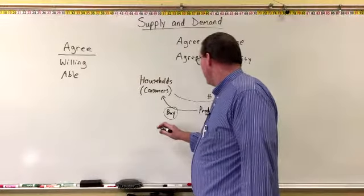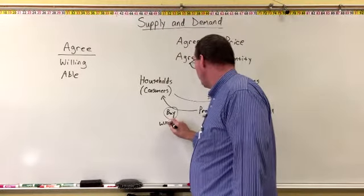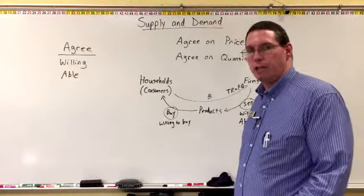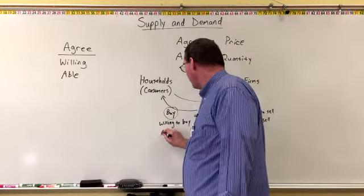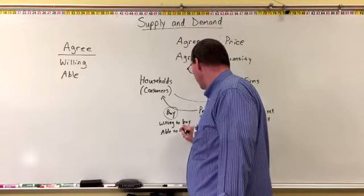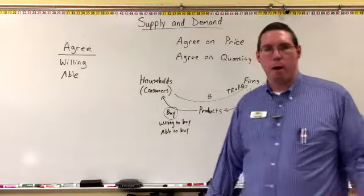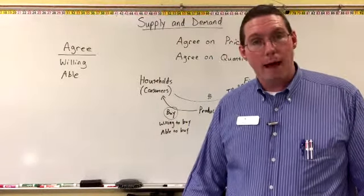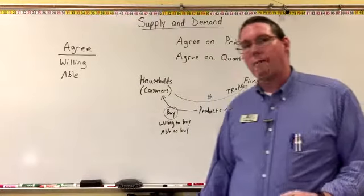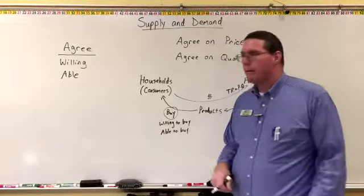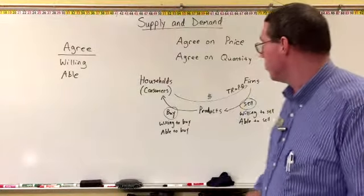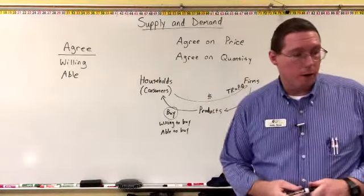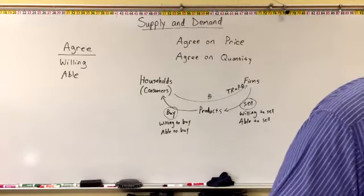Similarly, a consumer has to be willing and able to buy. I have to want the cheeseburger before I will buy the cheeseburger. If I walk into Burger King and say I'll take a Whopper, a large fry, and a large Coke, and they say that'll be $7, but I don't have any money — well, I'm willing to buy, but I'm not able to buy. We don't have a market transaction. Being willing and able are both required.